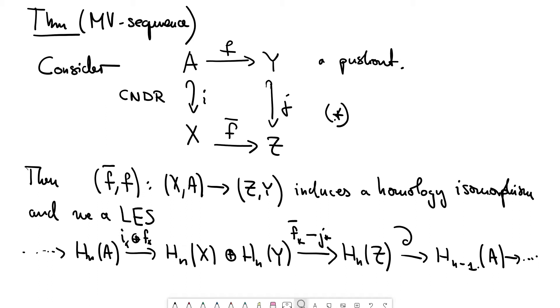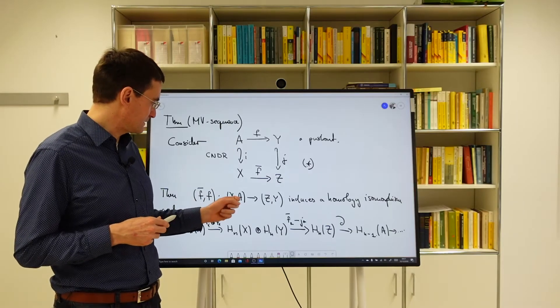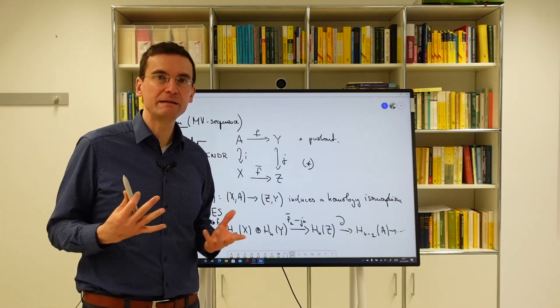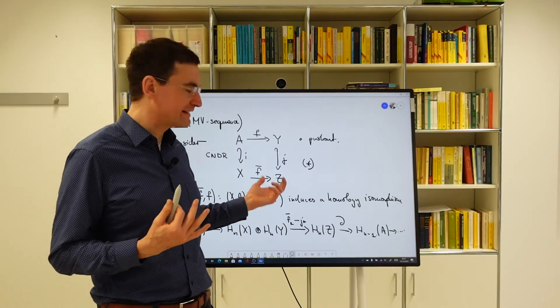I claim that the left hand side induces an isomorphism in homology when you map it to the right hand side. So this map of pairs induces a homology isomorphism. And some people call this excision.